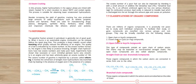Open chain or acyclic compounds are compounds in which the carbon atoms are arranged in the form of a chain. There can be branches and non-branches, but there are no cycles or rings.